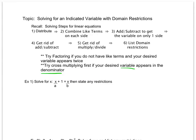On this first example, I'm asked to solve for x. So the first thing I notice is that I have nothing to distribute. I have no like terms on each side, but I do have a variable on both sides. So I'm going to go ahead. And because I'm going to anticipate that I'm going to get the variable by itself in the end, I'm going to subtract x over a from both sides.